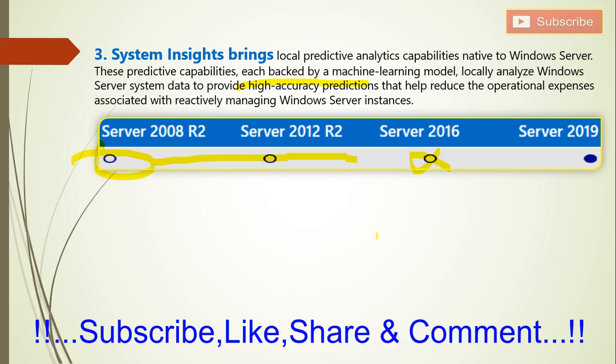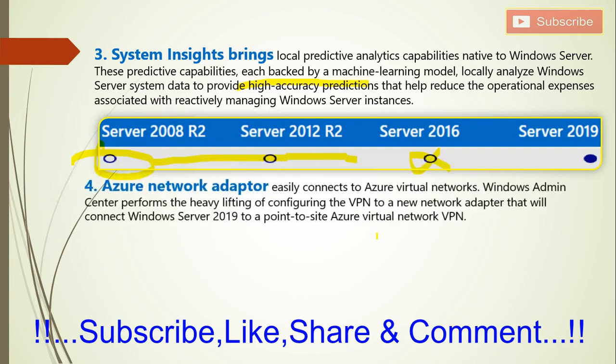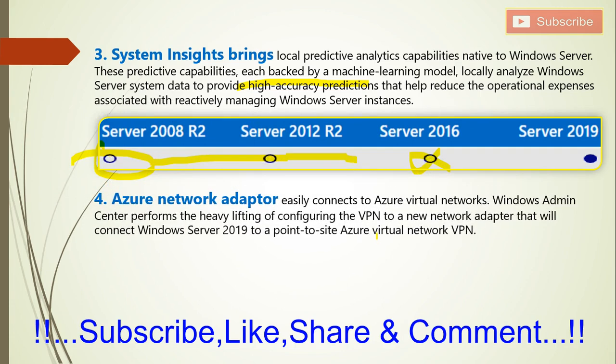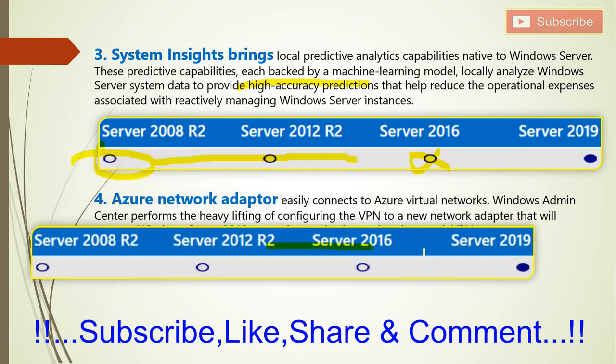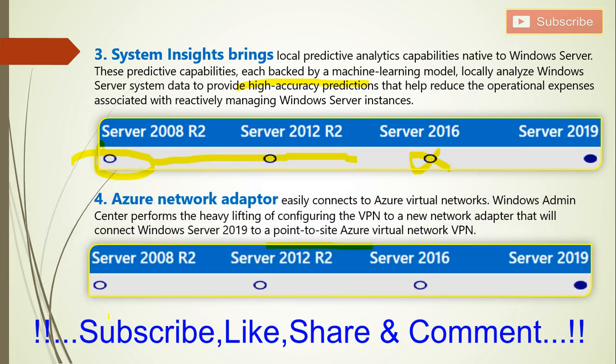The next feature is Azure Network Load Balancer. It is helpful for connecting to Azure from your server. If you are using 2019, you can easily connect to Azure using this feature, and it gives you facilities to create site-to-site or point-to-site virtual VPN networks easily without any problem. This is available in 2019 only — the three prior versions 2008, 2012, and 2016 do not have this feature.